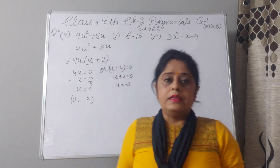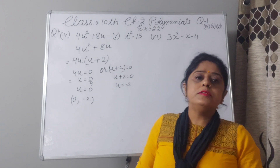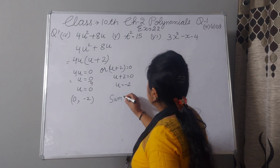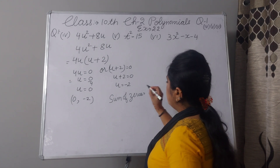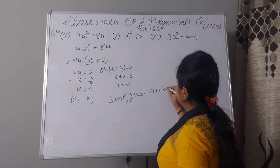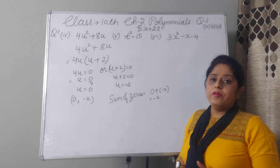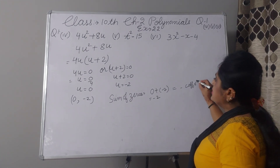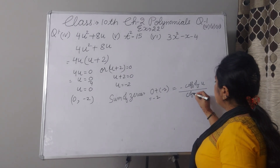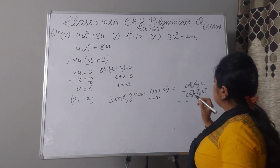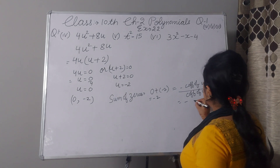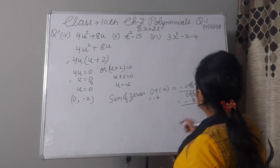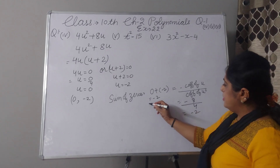Now we will verify by the relationship between zeros and coefficients. Sum of zeros: zero plus minus 2 means minus 2. According to formula, sum of zeros is minus coefficient of u divided by coefficient of u square. Coefficient of u is 8 and coefficient of u square is 4. Minus 8 by 4 gives minus 2. Verified.